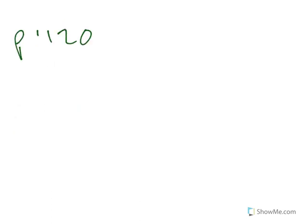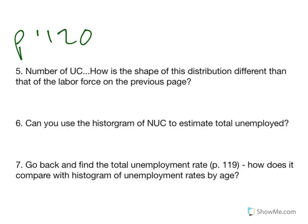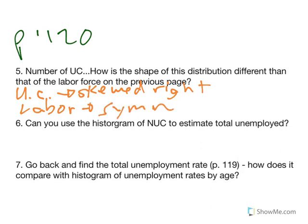Let's turn the page to 120. Using the graphs on page 120, answer questions five, six, and seven. Number five - how does the shape of the distribution of unemployed civilians differ from that of the labor force on the previous page? This one - the unemployed civilians - I would say it's definitely skewed right. However, when you look at the labor on page 119, I would say the labor is more symmetric. It's not perfectly symmetric, but it's way more symmetric than the unemployed civilians. So that's kind of how they're different.